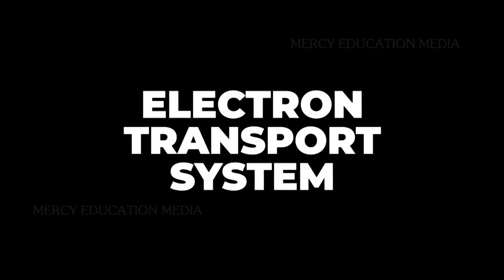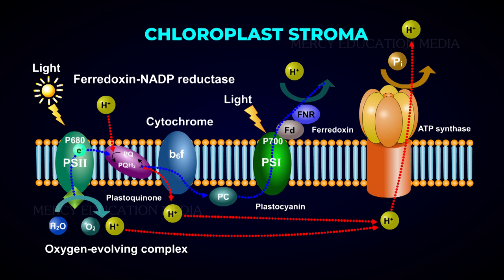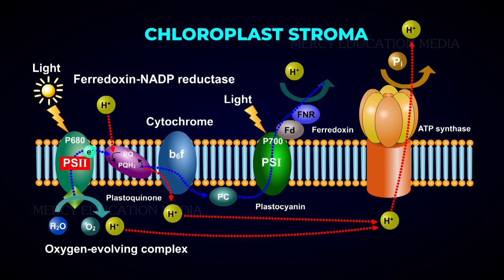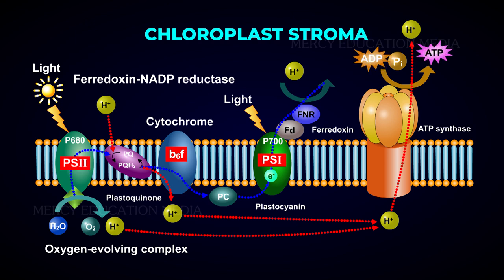Let us see the electron transport system. The light-driven reactions of photosynthesis are referred to as the electron transport chain. When PS2 absorbs photons of light, it is excited and electrons are transported through the electron transport chain of Plastoquinone, Cytochrome B6, Cytochrome F, and Plastocyanin.